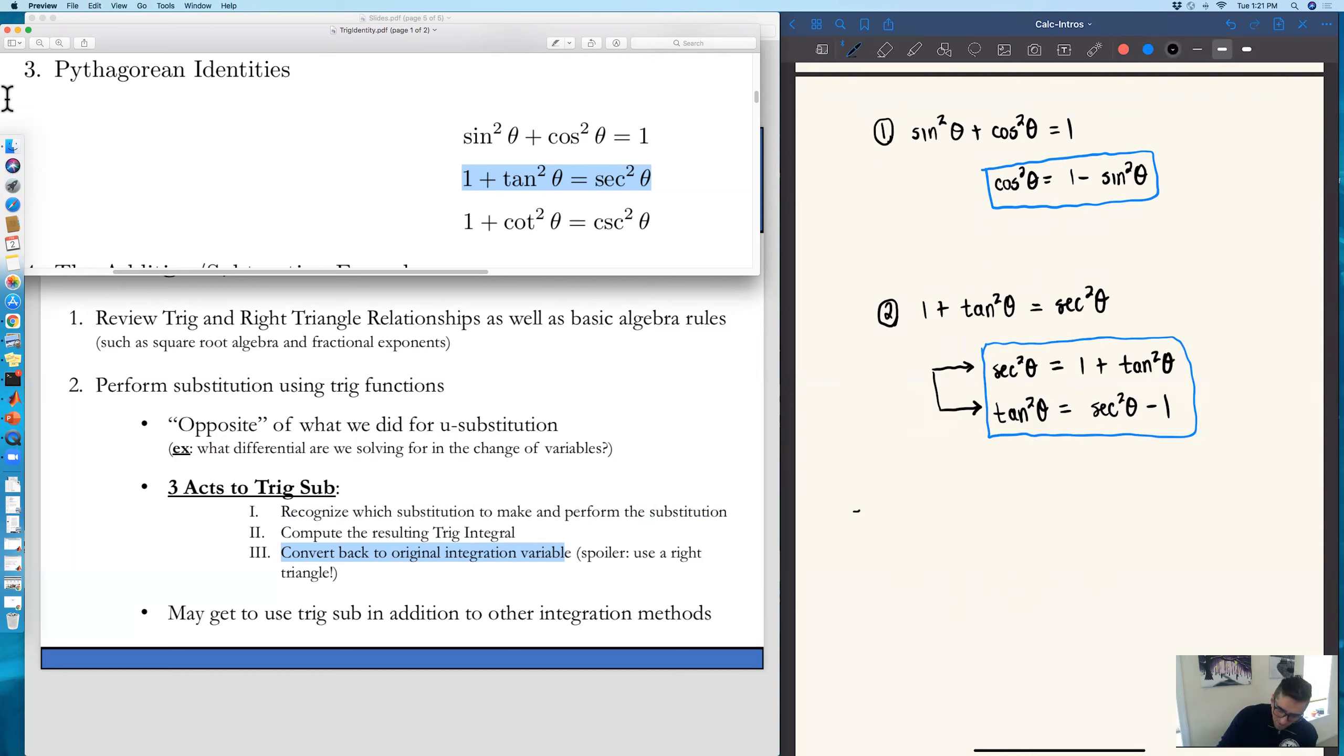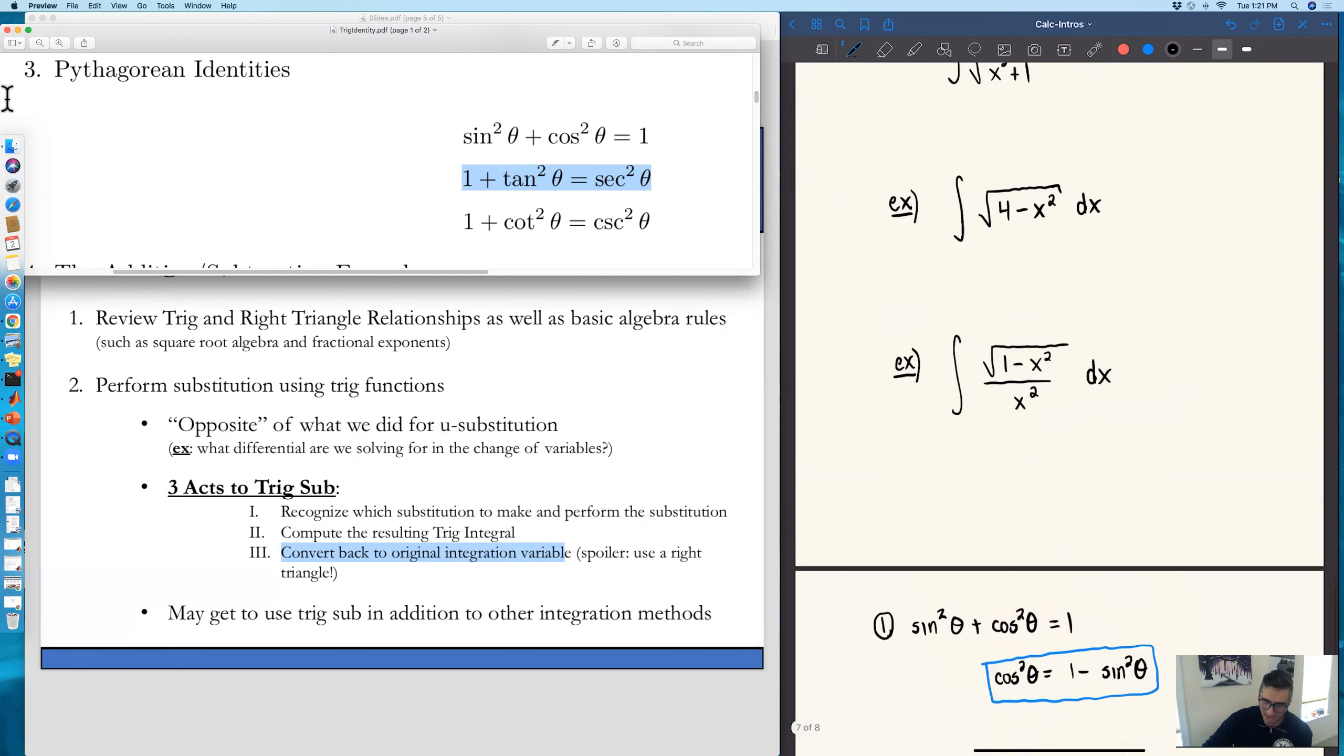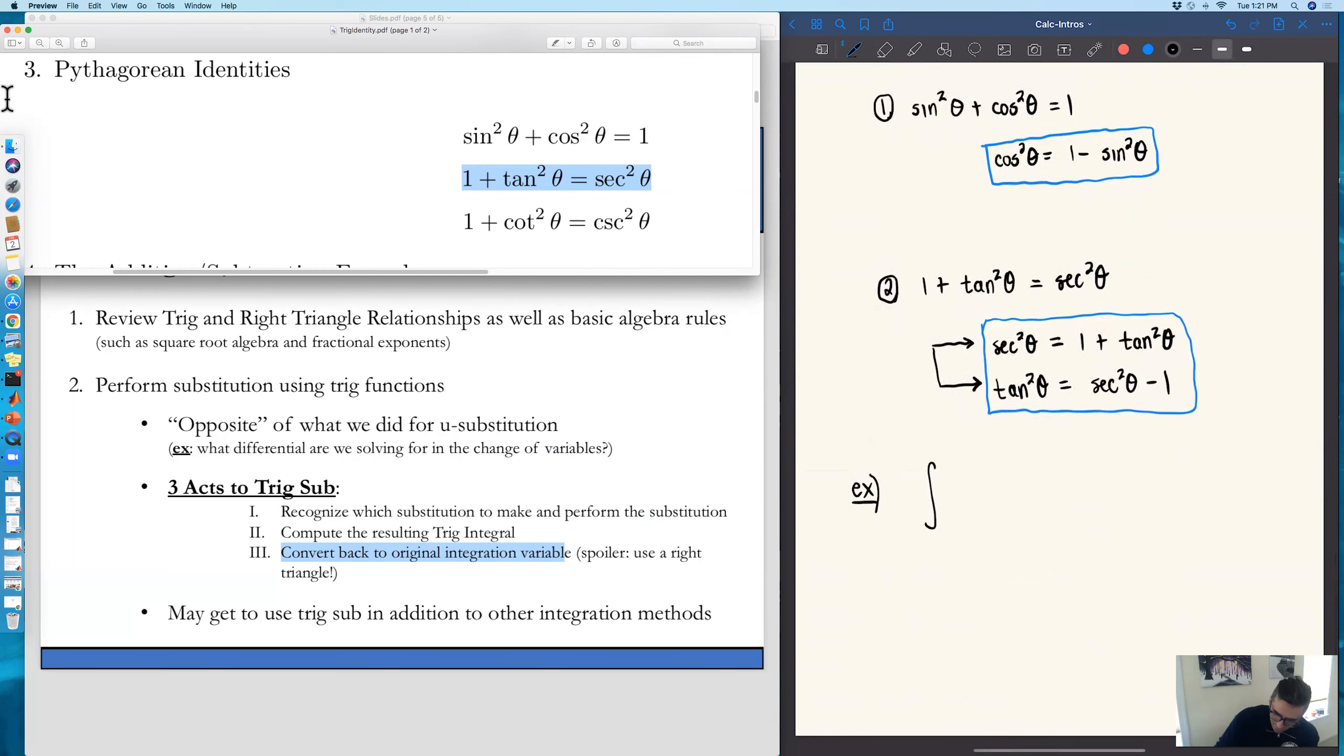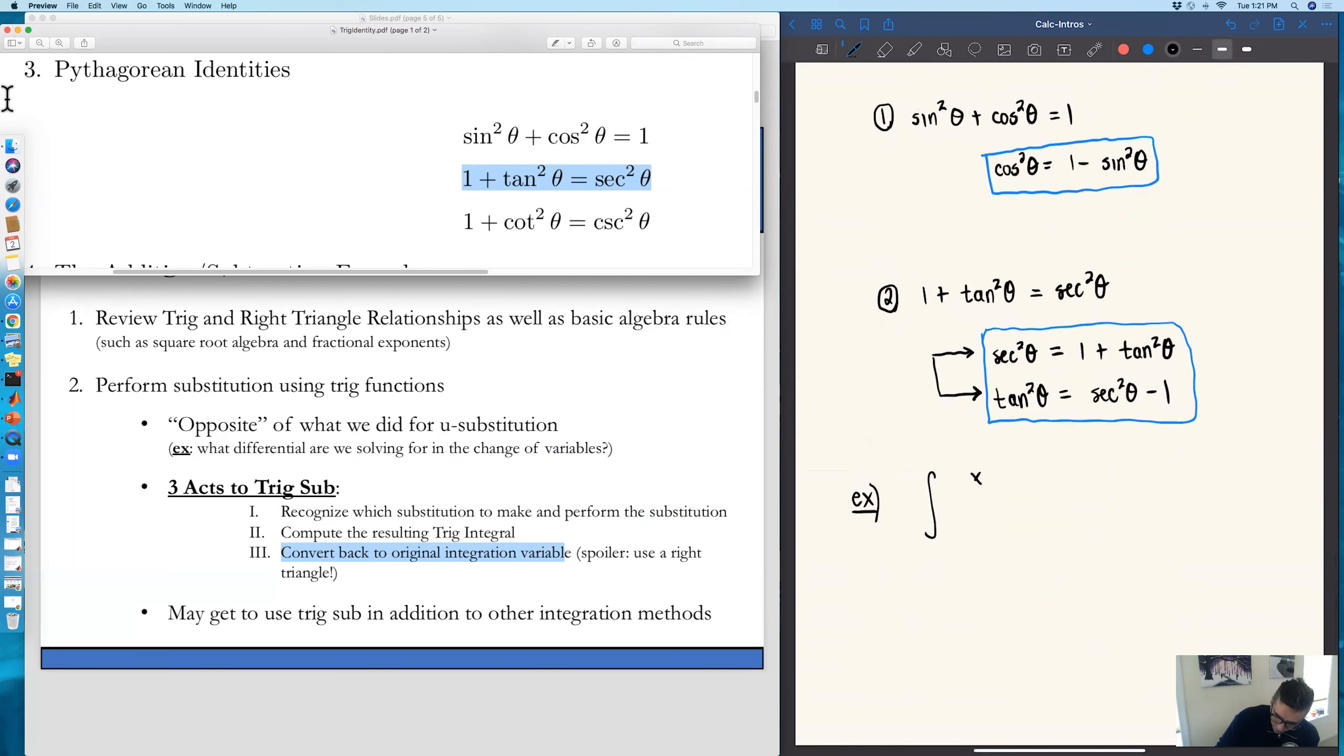So for example, if I just bring up one of our original integrals here, which was x over square root of x squared plus one. Remember what we're trying to do is get rid of the square roots in that integral. So if we're looking at what's underneath the square root, it's that x squared plus one term. So the way in which I try to view these things would just be looking at this: I have this as x squared plus one.